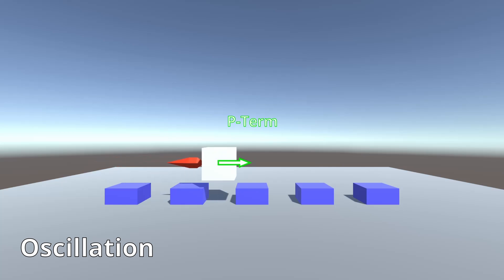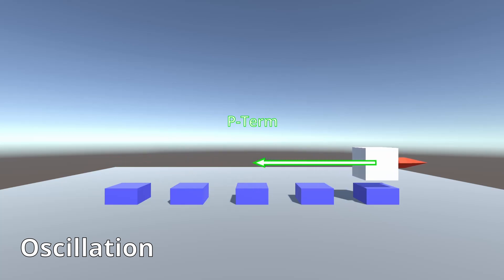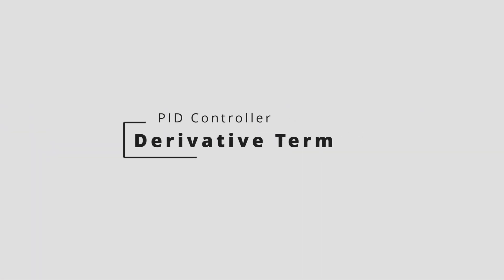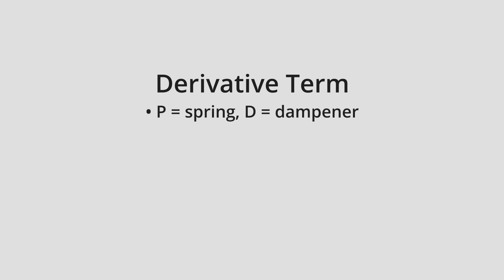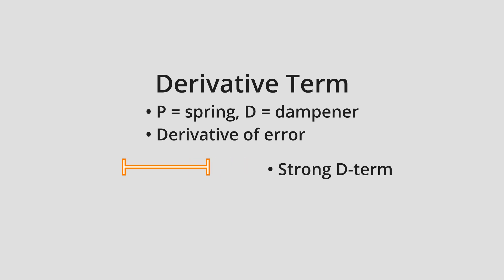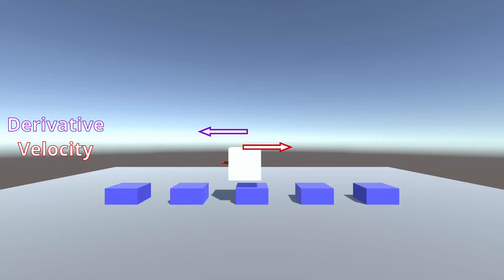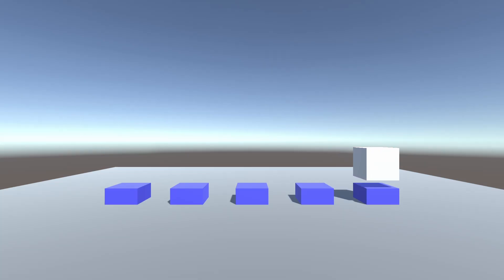Oscillation is one of the main problems you can face when using a PID controller. The D-term gives you a way to limit the oscillation. If the P-term acts like a spring, the D-term acts like a dampener. The D-term applies a force based on the derivative, or rate of change, of the error. So if the error is shrinking or growing rapidly, the D-term is strong; if the error is barely changing, the D-term is weak. The derivative of error is exactly the opposite of the box's velocity. Essentially, the D-term acts as a braking force that gets stronger when the box moves faster.